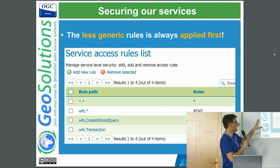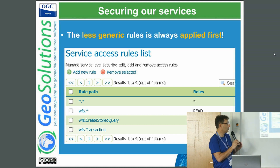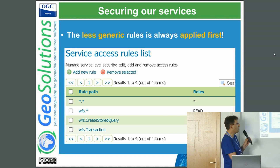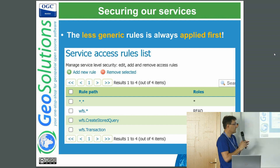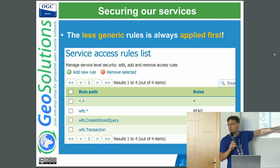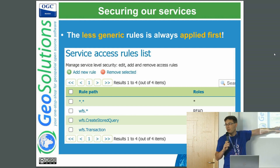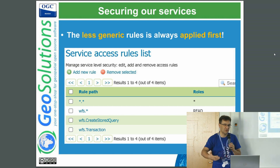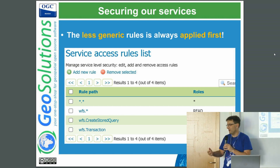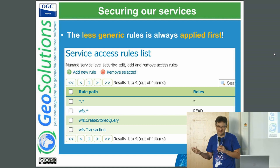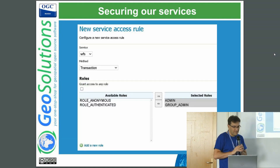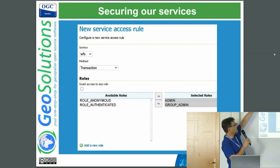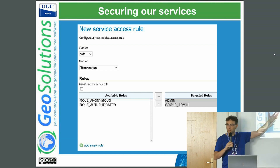The built-in authorization handles services and operations, workspace administration, and data as layers — so we authorize the layer itself, not the content within it. The built-in mechanism is simple: you can either access a layer or you cannot; you can either write to a layer or you cannot. For example, you need to have the read role to access the WFS service, but you have to be an administrator to do a WFS Transaction.